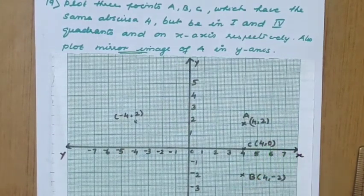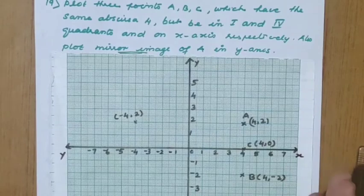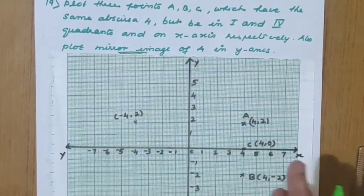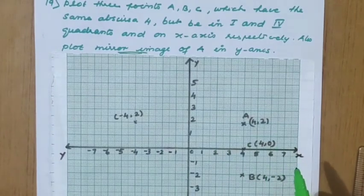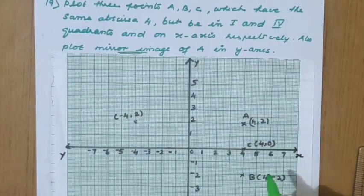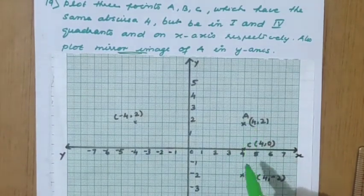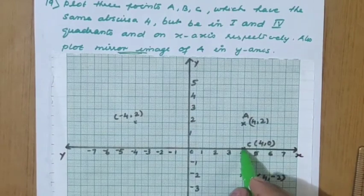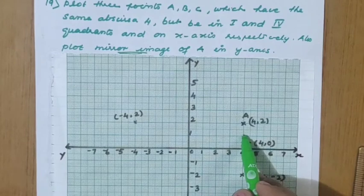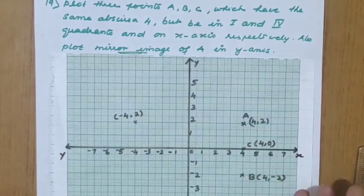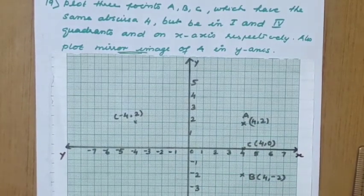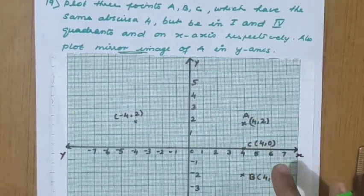Any other y value for A and B is also correct. For example, (4, 1) also lies in the first quadrant, and (4, −1) is also in the fourth quadrant. The x-coordinate 4 stays constant, and students can change the y-coordinate for A and B but not for C, since C is clearly on the x-axis.